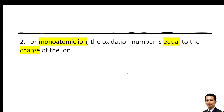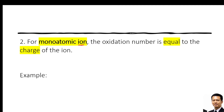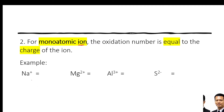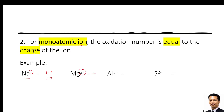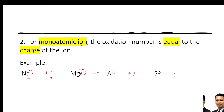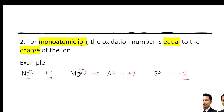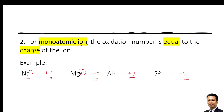For monoatomic ions — the keyword here is ion — the oxidation number is equal to the charge of the ion. For example, sodium ion (Na⁺) has oxidation number +1. Magnesium ion (Mg²⁺) has oxidation number +2. Aluminium (Al³⁺) is +3. And sulfur (S²⁻) is −2. So this is the oxidation number for ions — not atoms, not molecules, but ions.